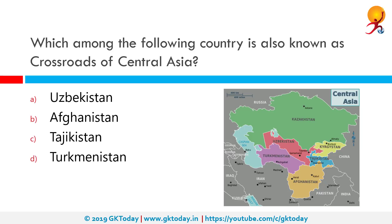Which among the following countries is also known as the crossroads of Central Asia? The correct answer is Afghanistan. Central Asia has historically been closely tied to its nomadic people and the Silk Road. Afghanistan has acted as a crossroads for the movement of people, goods, and ideas between Europe, Western Asia, South Asia, and East Asia.